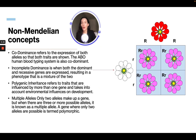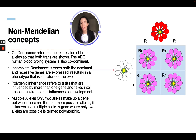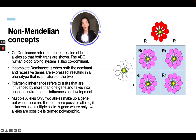There are also non-Mendelian concepts. Co-dominance refers to the expression of both alleles so that both traits are shown. The ABO human blood typing system is an example — if you have AB blood, you have both the A and the B traits. Incomplete dominance is when both the dominant and recessive genes are expressed, resulting in a phenotype that is a mixture of the two — for example, crossing a white flower with a red flower gives pink flowers.